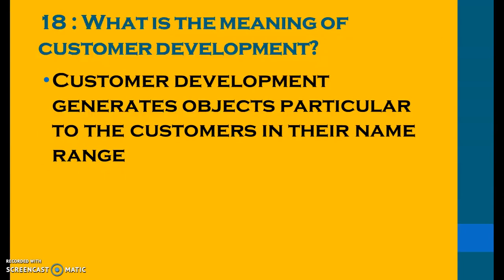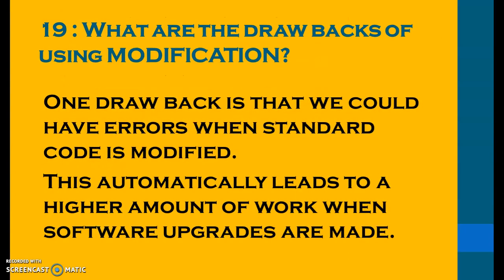Customer development generates objects particular to customers in their name range — anything starting with Y or Z. What are the drawbacks of using modifications? One drawback is that we could have errors when the standard code has been modified, and this automatically leads to a higher amount of work when software upgrades are made.